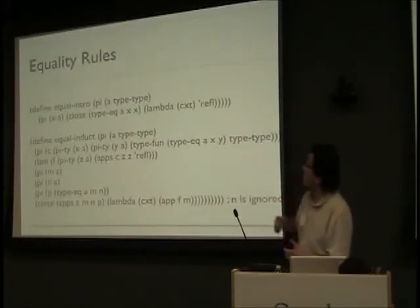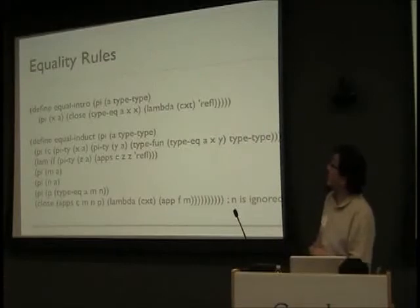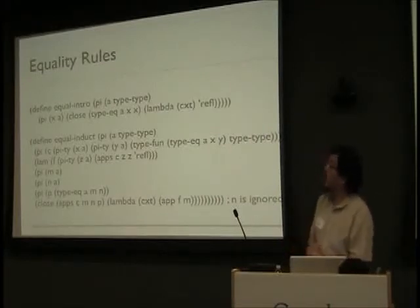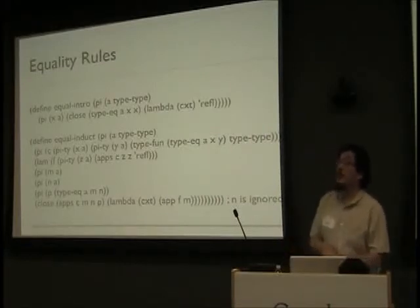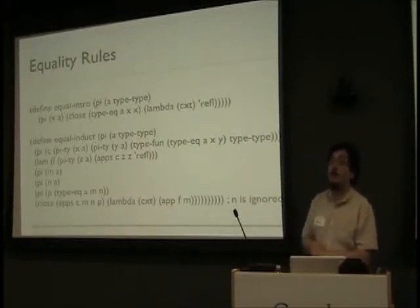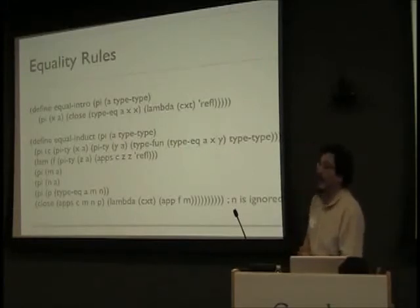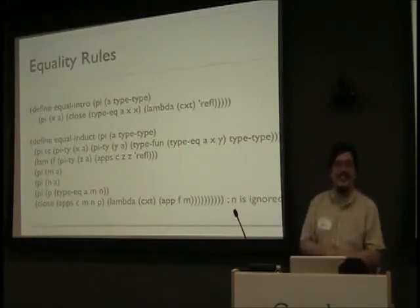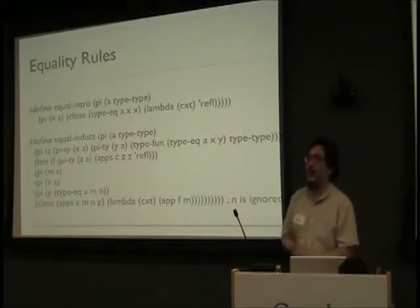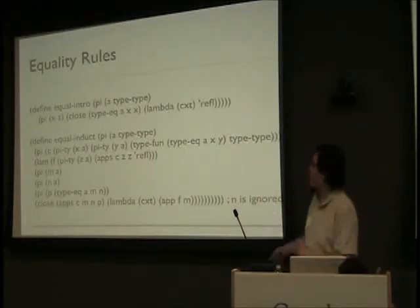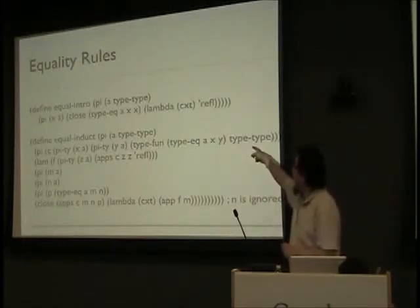So there's our equality intro. We only have one rule for introducing equality: you give me one term of a type, and I promise you it's equal to itself. We call that reflexivity. That's the only way you can get equality — you have one thing, and you know it's equal to itself.